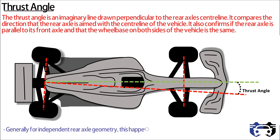A non-zero thrust angle affects vehicle handling characteristics and increases tire wear. For independent suspension geometry, this typically happens due to improper toe settings — where one wheel has toe-in and the other has toe-out. In this case, the suspension of each side of the vehicle must be adjusted individually to achieve the proper toe setting.